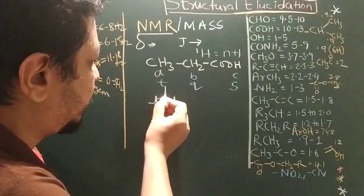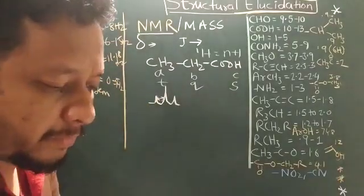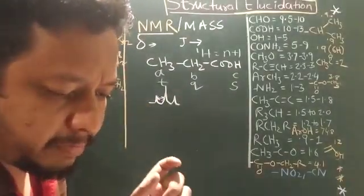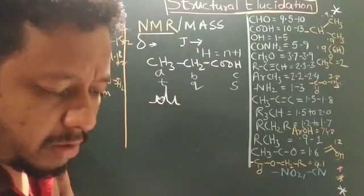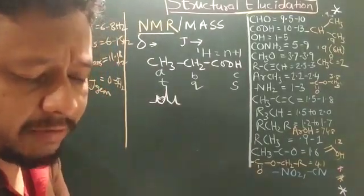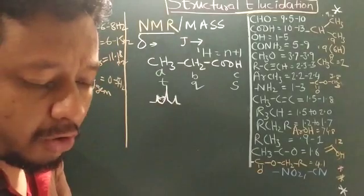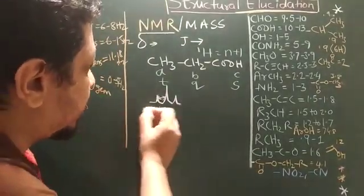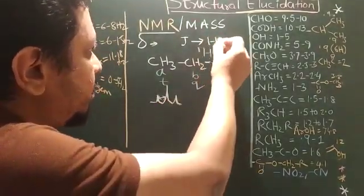If you see the distance between the spacing between the peaks is referred as coupling constant or J value whose unit is Hertz. J value whose unit is Hertz.